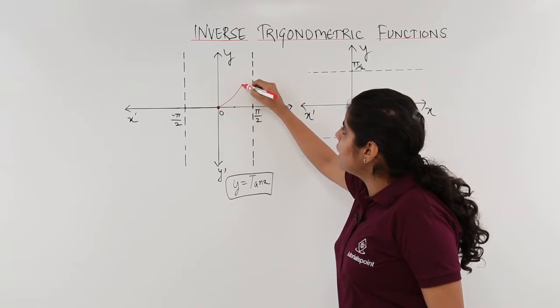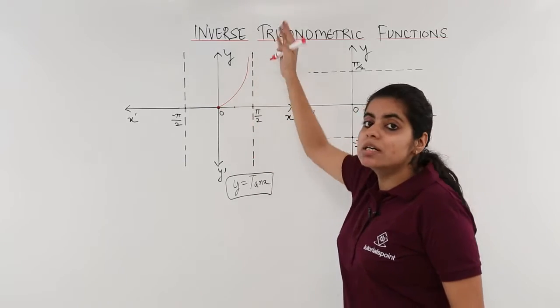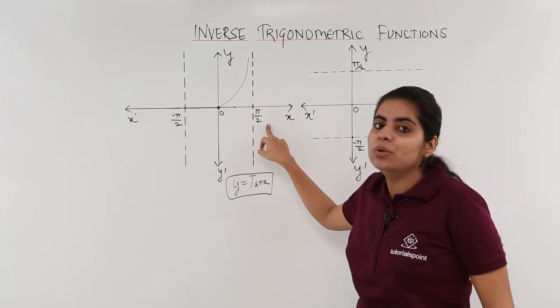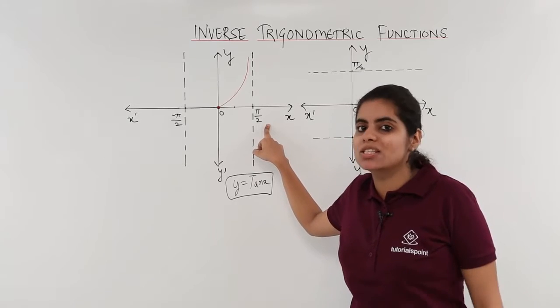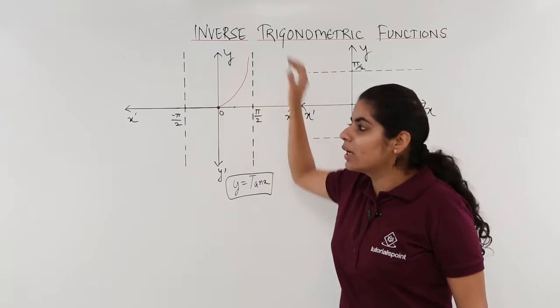The graph will be something which will be going upwards. Why? Because when you reach tan 90 degree, the value becomes closer or tends towards infinity. So it will be going upwards.